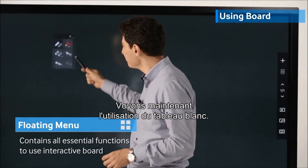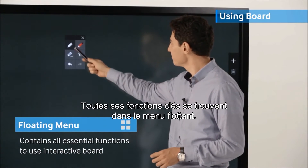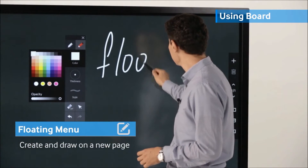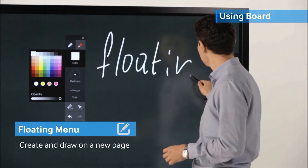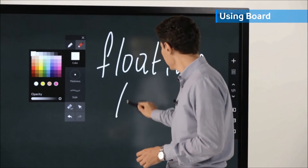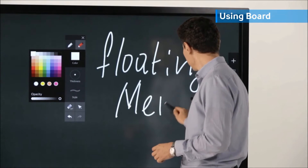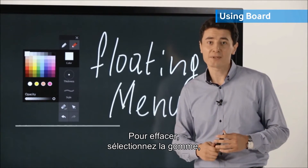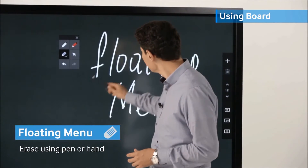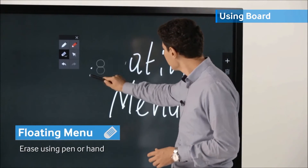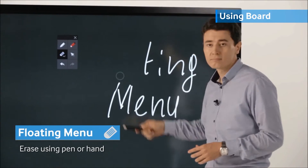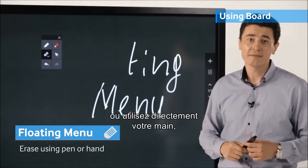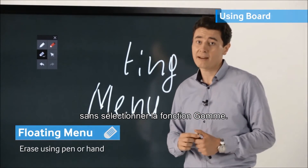Let's take a closer look at how to use the whiteboard. All the essential functions when using the whiteboard are in the floating menu. You can select the eraser option to erase, or you can use your hand and eraser without selecting the eraser option.